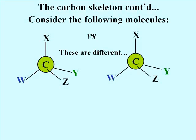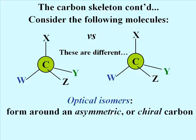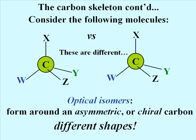We say the carbon is an asymmetric carbon, or an asymmetric center. Another word we use sometimes is chiral. So optical isomers form around an asymmetric or chiral carbon. Clearly not all carbons in a molecule are going to be asymmetric.